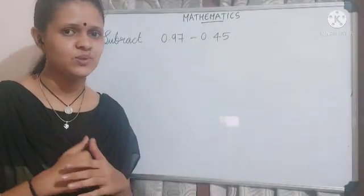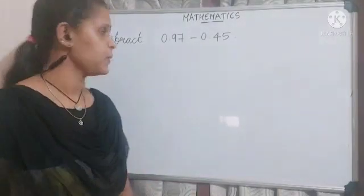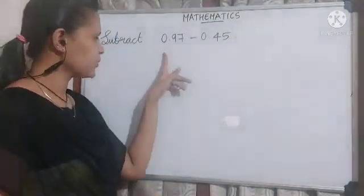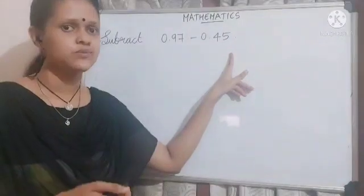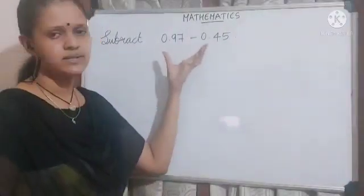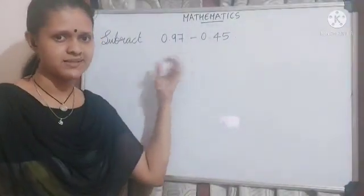Next, let's do the subtraction of decimal numbers. Subtract 0.97 minus 0.45. First, align the given decimal numbers.